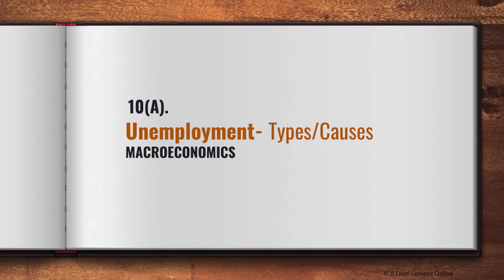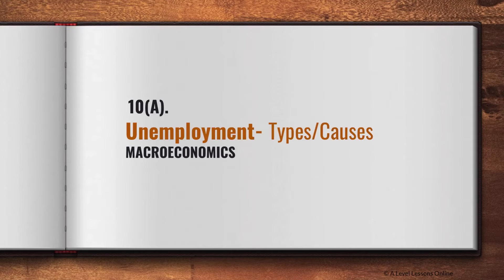Hey everyone, welcome back to A-Level Lessons Online. In today's video we're going to be looking at the next part of our macro econ series, moving on to part 10a on unemployment. In the previous four videos we've really gone through what economic growth is as well as inflation. Here we're going to be covering the macroeconomic goal of achieving low unemployment.